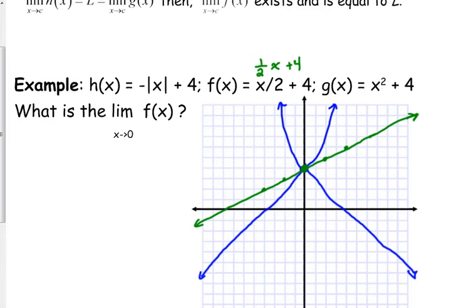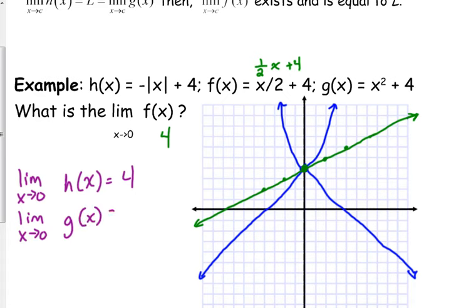What is the limit as we approach 0 of f(x)? Well, clearly we can look at it and say, as x approaches 0, f(x) is approaching 4. But we could also use the squeeze theorem to show that fact. Because the limit as x approaches 0 of h(x) is 4, and the limit as x approaches 0 of g(x) is 4. And because they're the same thing, and f(x) is between them at all times, then the limit of f(x) must also be 4.